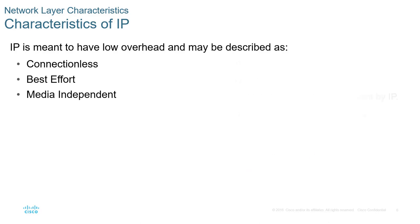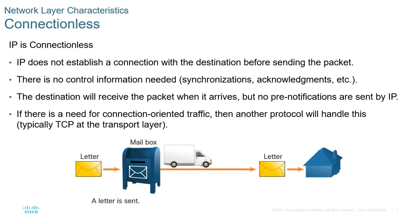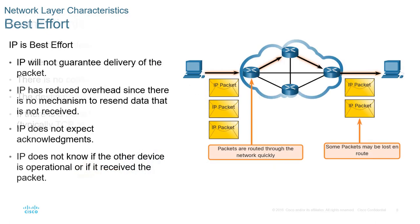Connectionless basically means best effort — no connection establishment. It just sends the packets. If you get them, great; if you don't, there's no notification that they weren't received. As data flows through a network, some packets may get lost — that's okay. Best effort means no acknowledgement. It will recover the best it can and move forward.